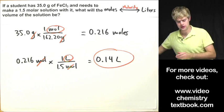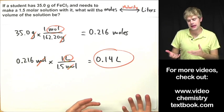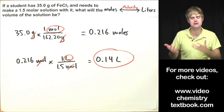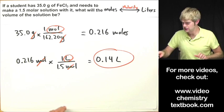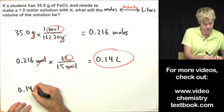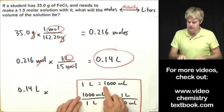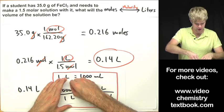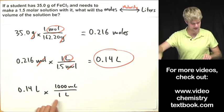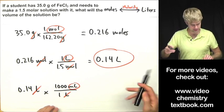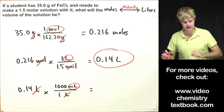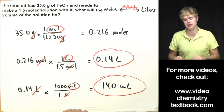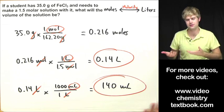Now, 0.14 liters could be the final answer, but since it's smaller than 1 liter, it would be nicer to express it in milliliters. Using the conversion factor of 1,000 milliliters per 1 liter, liters cancel and we multiply 0.14 by 1,000 to get 140 milliliters. That's a better-looking final answer — there's nothing wrong with 0.14 liters, it's just neater in milliliters.